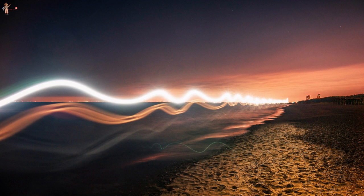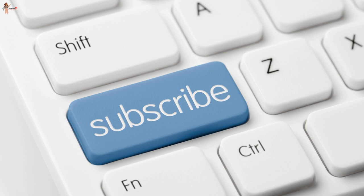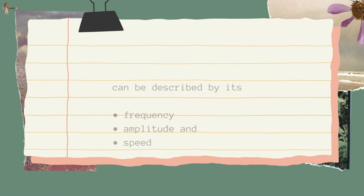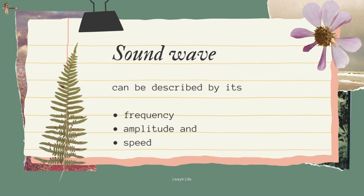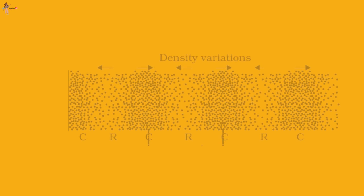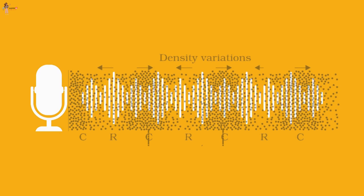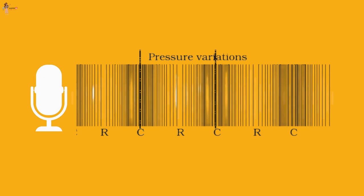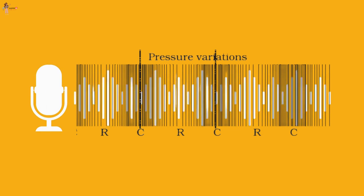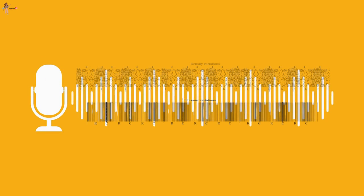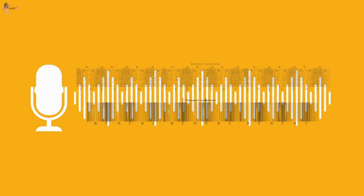Light is a transverse wave, but for light the oscillations are not of medium particles or their pressure or intensity — it is not a mechanical wave. Characteristics of a sound wave: we can describe a sound wave by its frequency, amplitude, and speed. A sound wave in graphic form shows how density and pressure change when the sound wave moves in the medium. The density as well as the pressure of the medium at a given time varies with distance, above and below the average value.